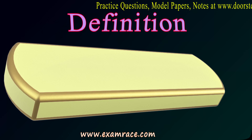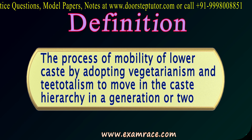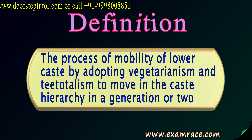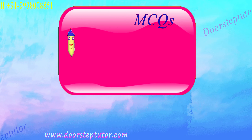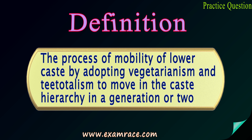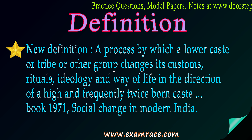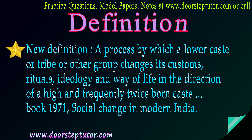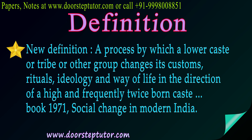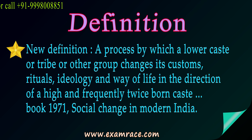The initial definition described the process of mobility of lower castes by adopting vegetarianism and teetotalism — that is, giving up alcohol — to move up in the caste hierarchy over a generation or two. This was the old definition given when he used the term Brahmanization. He then changed it to a new definition: it is a process by which a lower caste, tribe, or other group changes its customs, rituals, ideology, and way of life in the direction of a high and frequently twice-born caste. This new definition appeared in his book Social Change in Modern India, published in 1971.